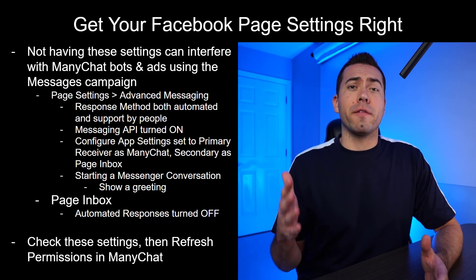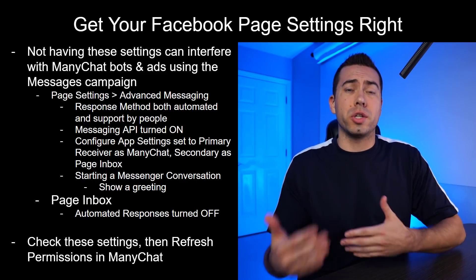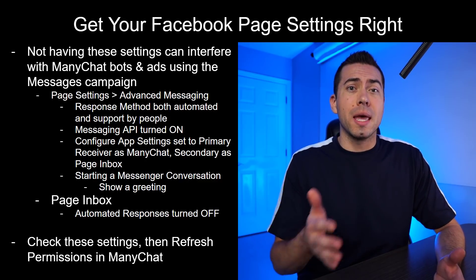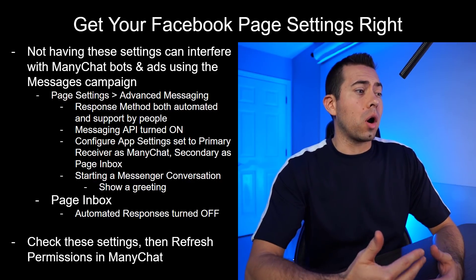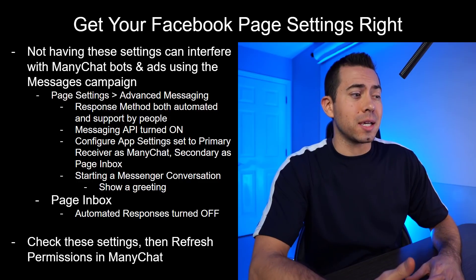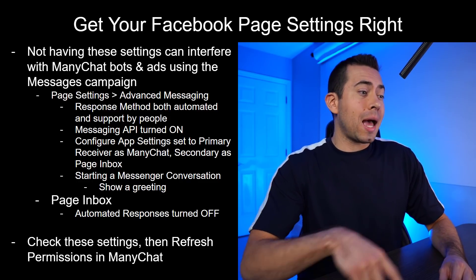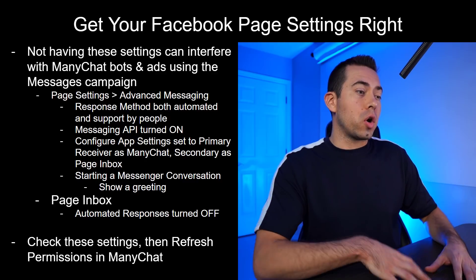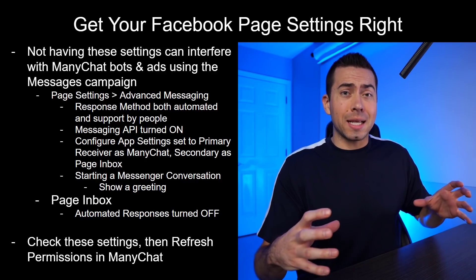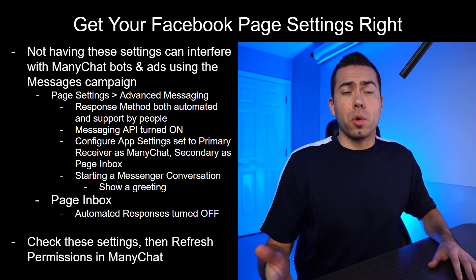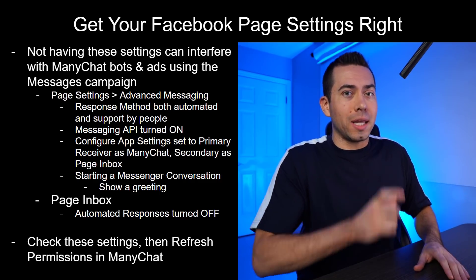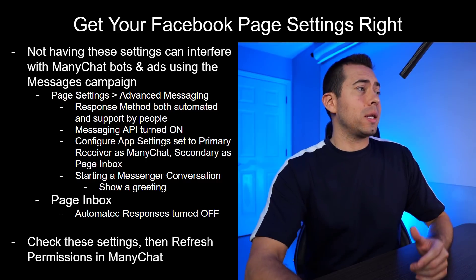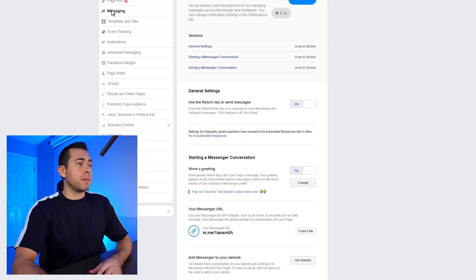First up, I'm going to show you how to set things up in your Facebook page settings to make sure that no glitches or issues happen, because you'd be surprised how often there are glitches and issues between Facebook and ManyChat. The things I'll be covering are in your Facebook page settings: the advanced messaging section, how to turn on your API, configure your app settings, make ManyChat the primary receiver and your page inbox the secondary, and setting up a greeting text for your Messenger ref URL campaigns. So let me go ahead and show you on my page — this is the messaging tab right here.